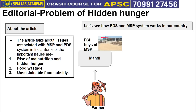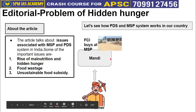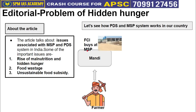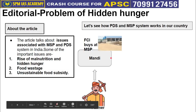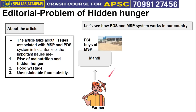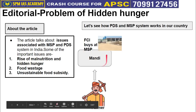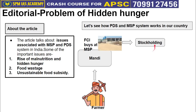Through the three new farm laws, the farmer as the target unit can go to the APMC mandi or to the FCI procurement unit and sell their food crop at MSP. The government announces in advance, for example, that they will buy wheat at ₹50 per kg. The FCI then buys the food grain and stock-holds it.